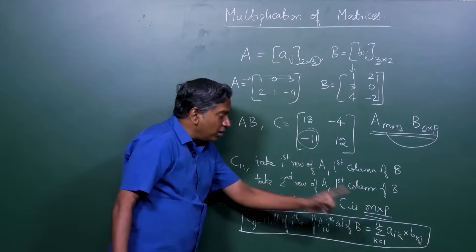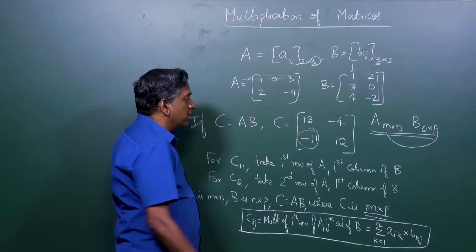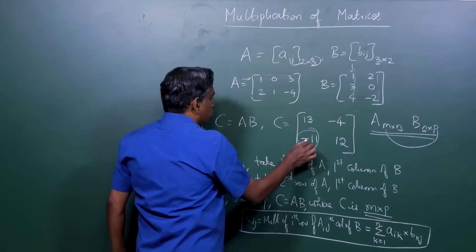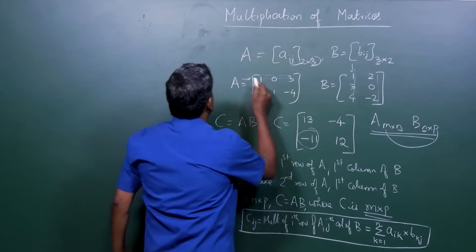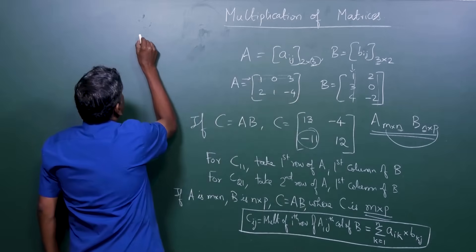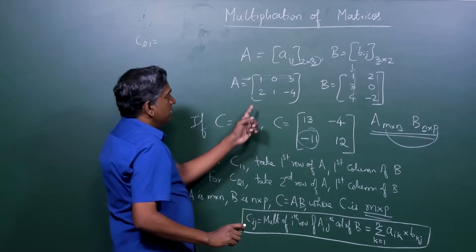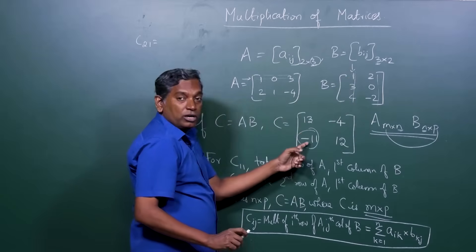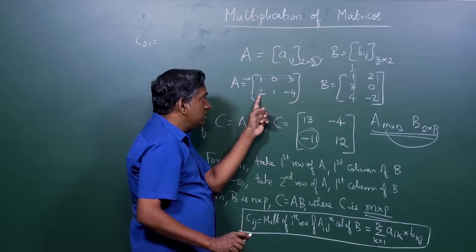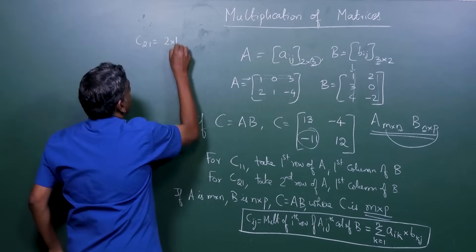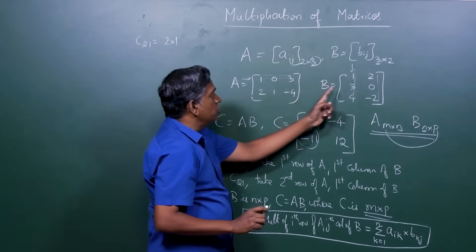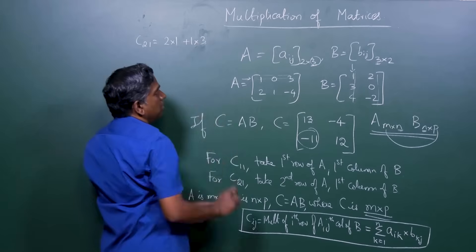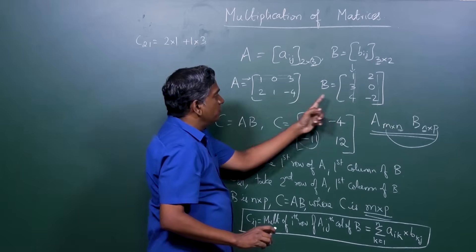So how did we get there? What does that thing translate to here? For example, in our example, let's say we take C21. Now C21 would have been second row of A times first column. We got minus 11, but how did we get it? It is 2 into 1 plus 1 into 3 plus minus 4 into 4.